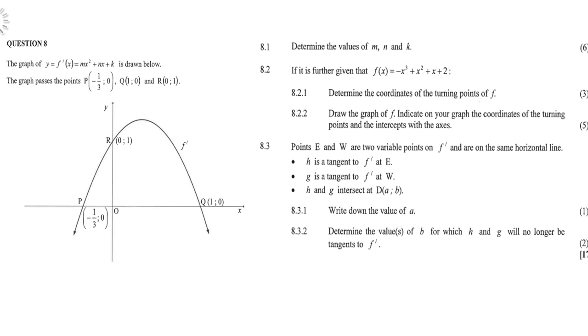The graph passes through point P, which is negative one-third and zero, Q which is one and zero, and R which is zero and one. Determine the values of m, n, and k.